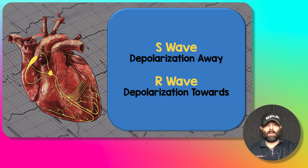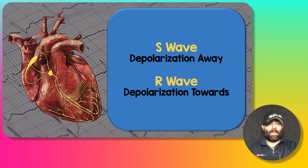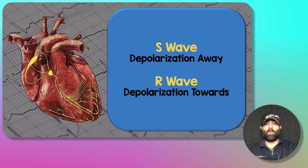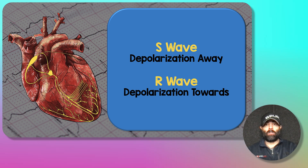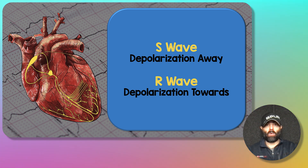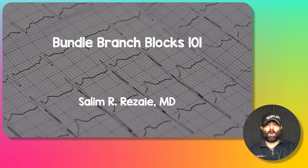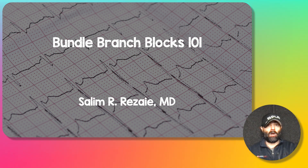The bottom line: when approaching bundle branch blocks, I like to put a heart with a conduction system, map out where the blocks are, and see which way conduction would move. Then remember: S-wave is depolarization away — stepping away — and R-wave is depolarization toward — running towards. I hope you enjoyed Bundle Branch Blocks 101. It's more complicated than this, but this gives you a solid foundation on how to identify bundle branch blocks. Thank you for tuning in, and until next time.